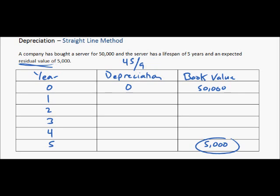45 divided by 5 equals 9. So our depreciation will be $9,000 a year. So we just put $9,000 for every year.